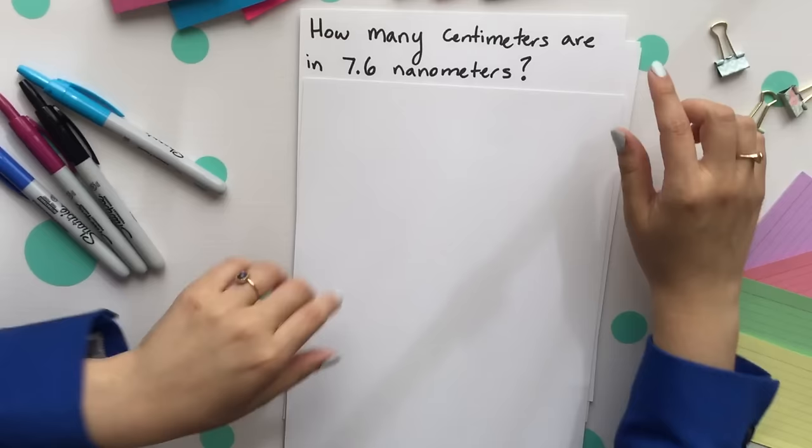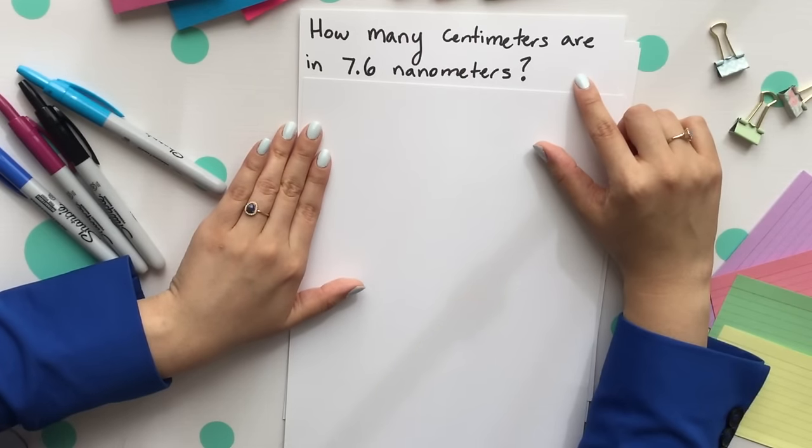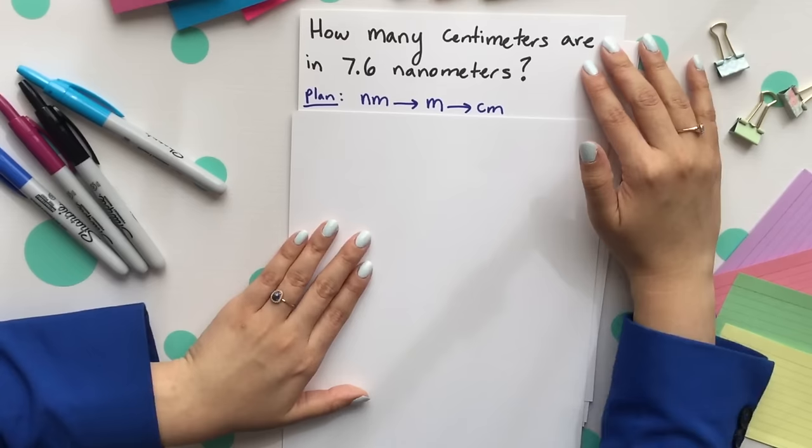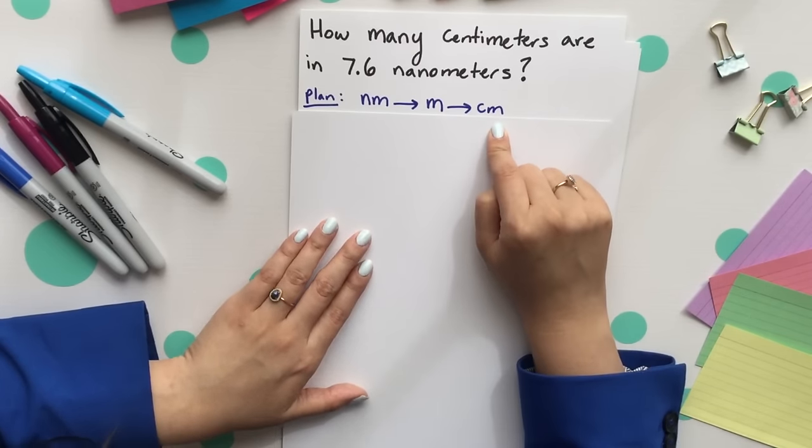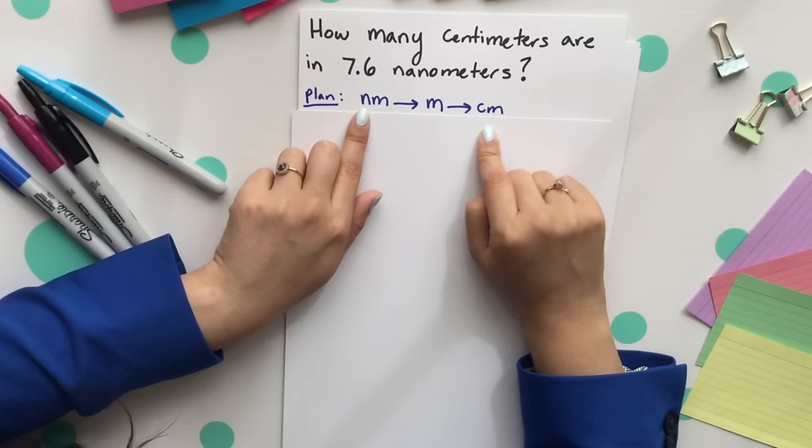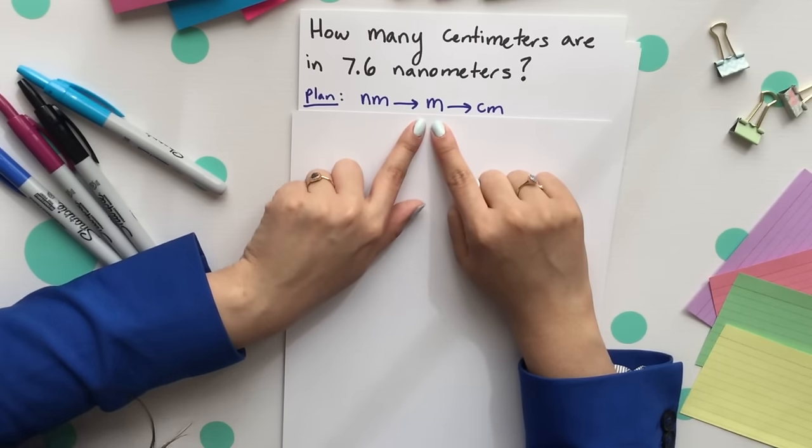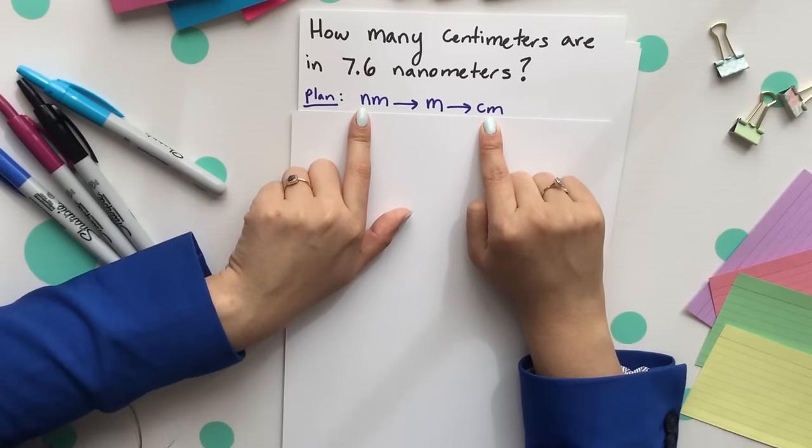It's time to throw in two conversion factors. How many centimeters are in 7.6 nanometers? Our plan is going from nanometers then to meters then to centimeters. You cannot just connect nanometers to centimeters. You need some sort of bridge which is meters to connect both units together.